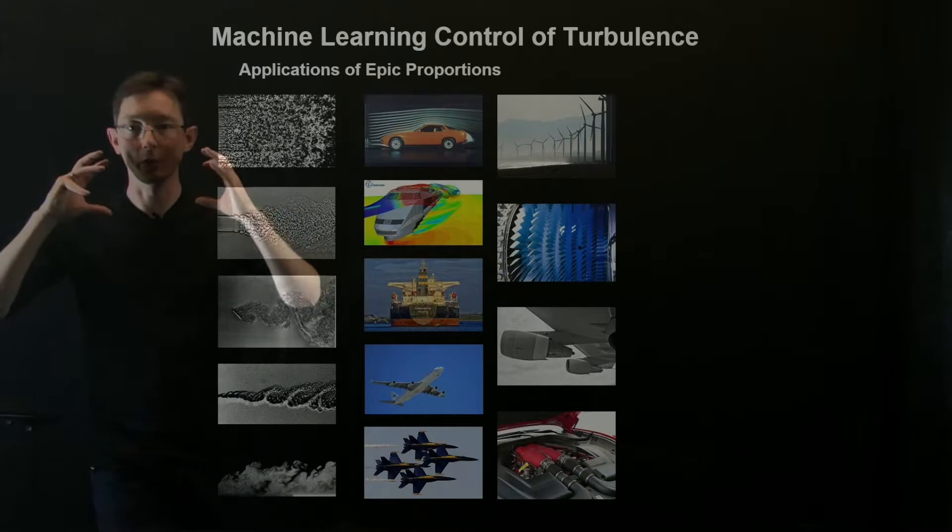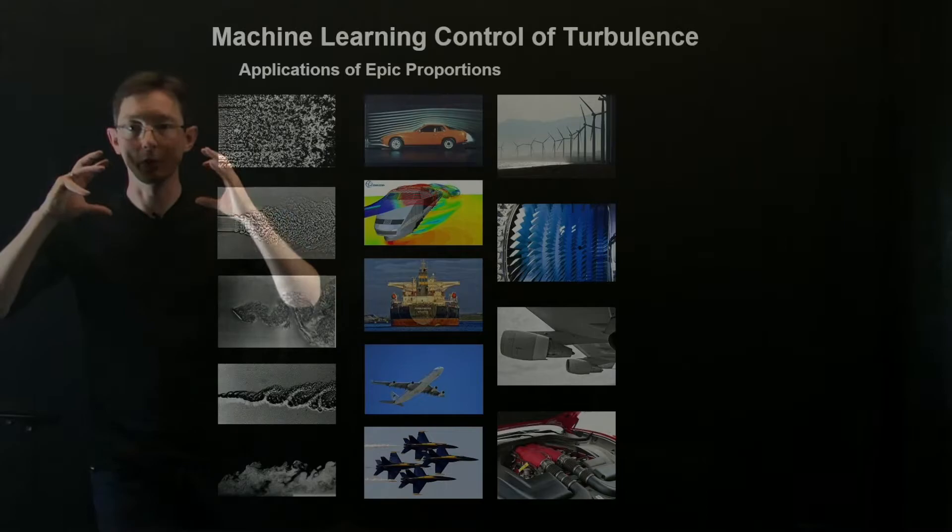But what I'm going to tell you about now is essentially instead of trying to model the turbulence for control, instead, we're going to use these machine learning ideas, this genetic programming control directly to find effective control laws to manipulate turbulence. Now, I love talking about this because this is one of the grand challenge problems of the modern era. So turbulent fluids are at the heart of nearly every trillion dollar industry.